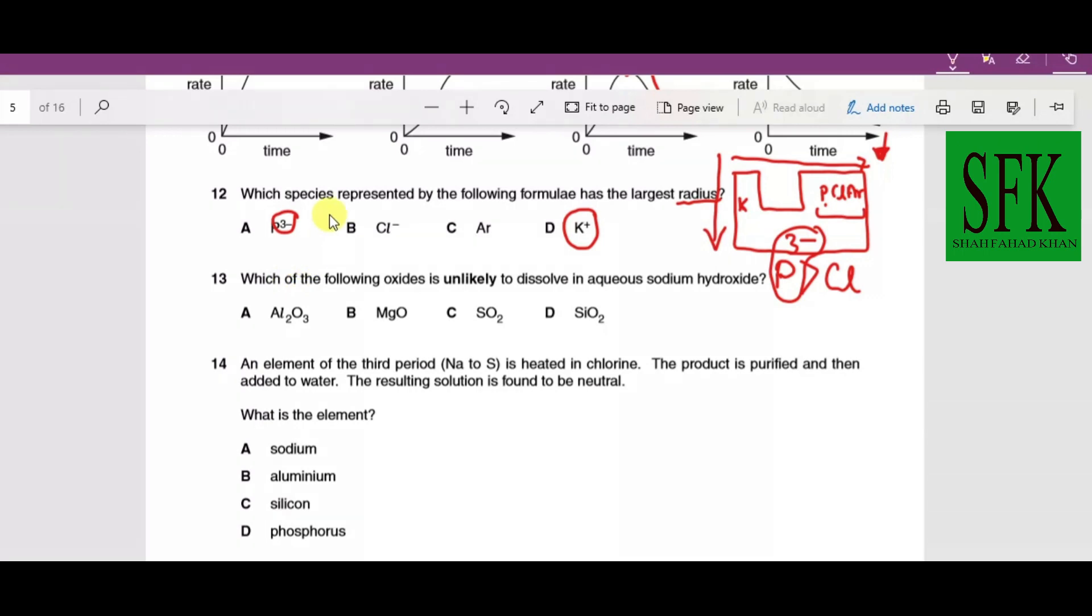Which of the following oxides is unlikely to dissolve in aqueous sodium hydroxide? Sodium hydroxide is basic, so anything basic will not dissolve in it. SiO₂ is acidic and will react. SO₂ is acidic and will react. Al₂O₃ is amphoteric so it will react with both sodium hydroxide and acids. Only MgO is the correct answer.